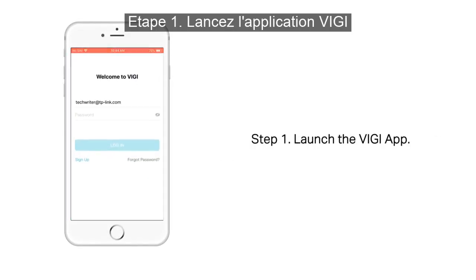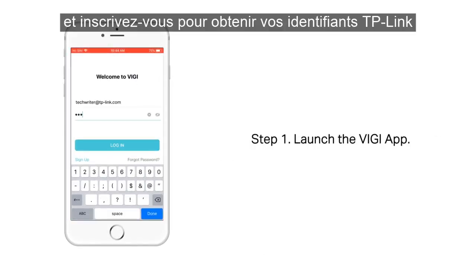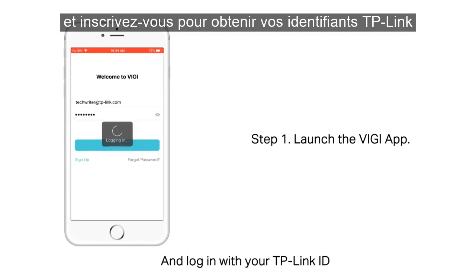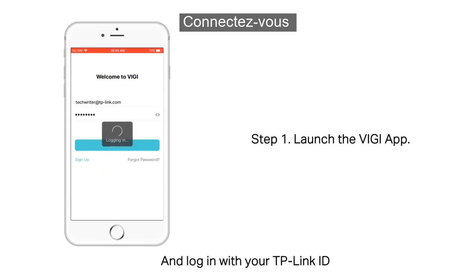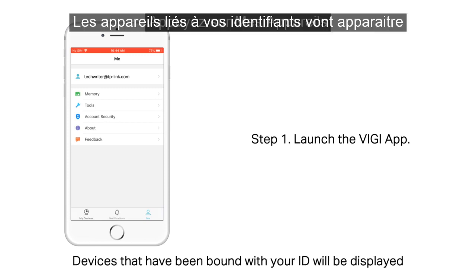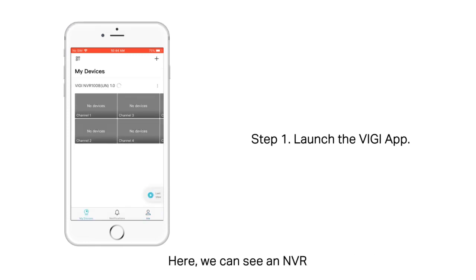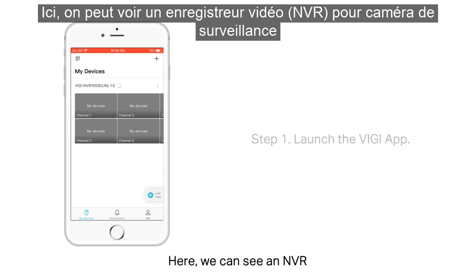Step 1: Launch the Vigi app. Open the Vigi app, register for a TP-Link ID, and log in with your TP-Link ID. Tap My Devices. Devices that have been bound with your ID will be displayed. Here we can see an NVR.